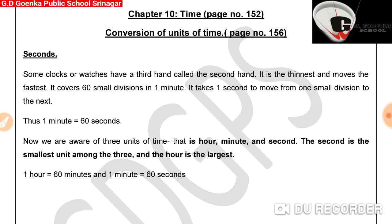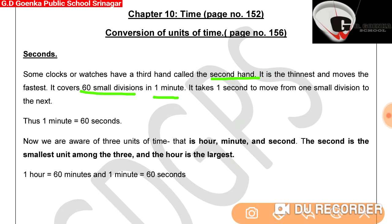Dear Goinkans, we have already learnt about the minute hand and the hour hand. Now, some clocks or watches have a third hand called the second hand. It is the thinnest and moves the fastest. It covers 60 small divisions in one minute, taking one second to move from one small division to the next. Therefore, one minute consists of 60 seconds.